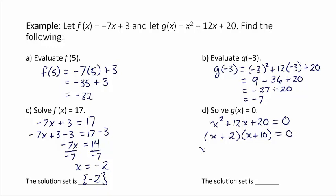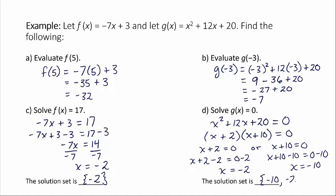Right, so now we know that either x + 2 is equal to 0 or x + 10 is equal to 0. One of the two has to be 0. And over here, I'm going to subtract 2 from both sides. x + 2 - 2 equal to 0 - 2. So x is equal to -2. And then with this other one, x + 10 equals 0, we have to subtract 10 from both sides. x + 10 - 10 equal to 0 - 10. So x is equal to -10. So the solution set includes {-10, -2}.